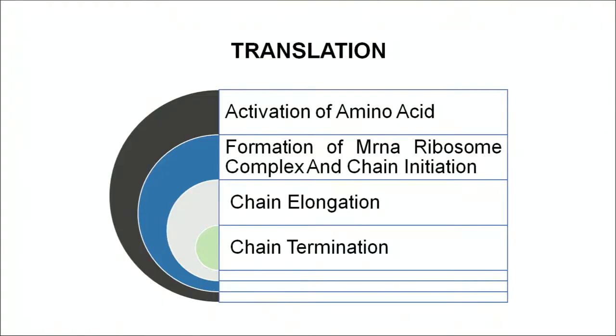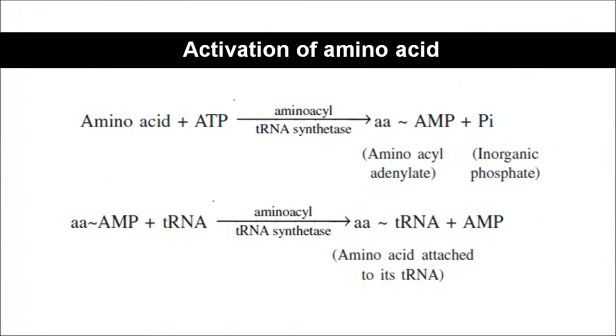The steps of translation are: activation of amino acid, formation of messenger RNA-ribosome complex and chain initiation, chain elongation, and chain termination. In amino acid activation, the amino acid combines with the ATP molecule - the energy currency of the cell. In the presence of the enzyme aminoacyl tRNA synthetase, an amino acid-AMP complex is formed and pyrophosphate is released. This amino acid-AMP then joins with tRNA, and adenosine monophosphate is ultimately released - this is known as the activation of amino acid.